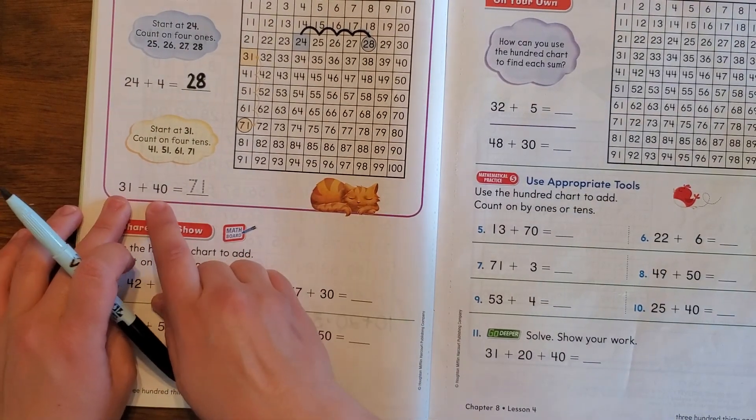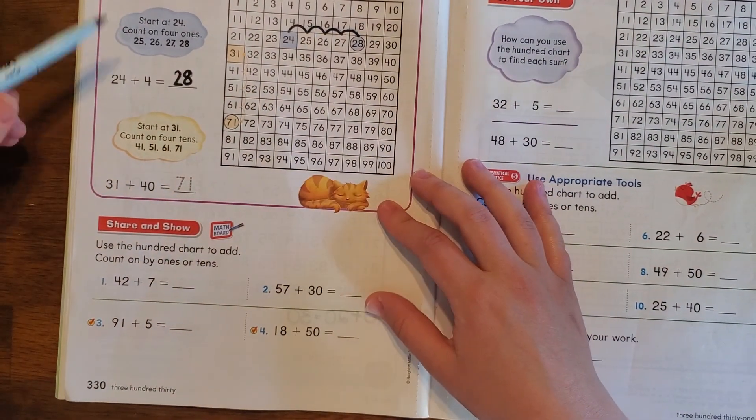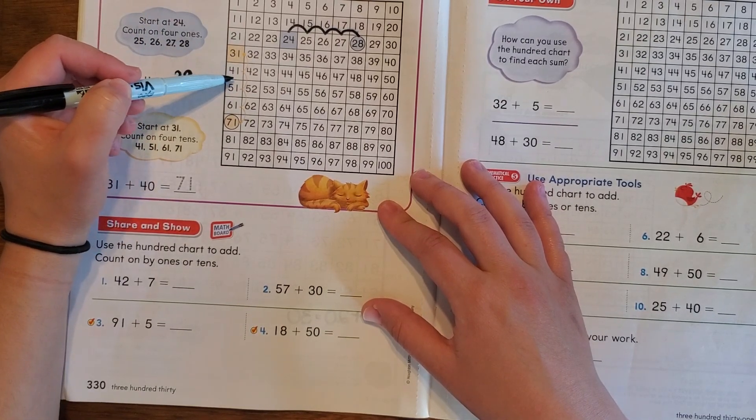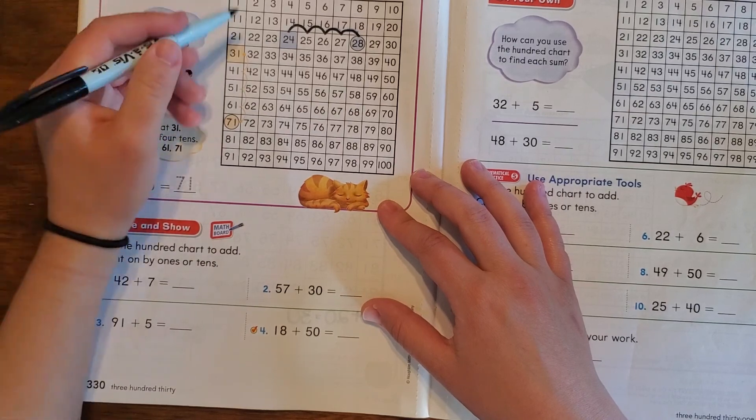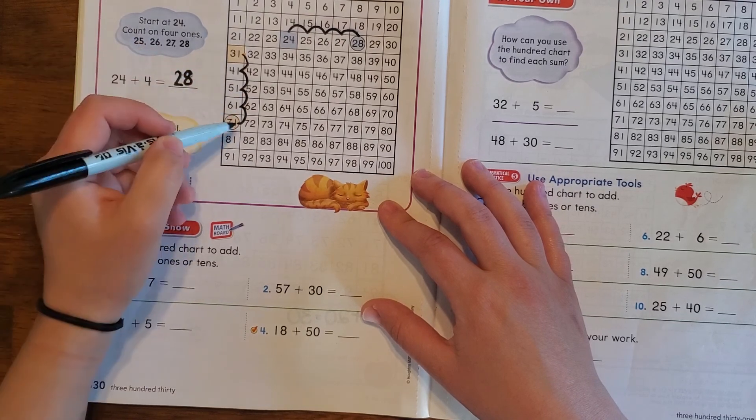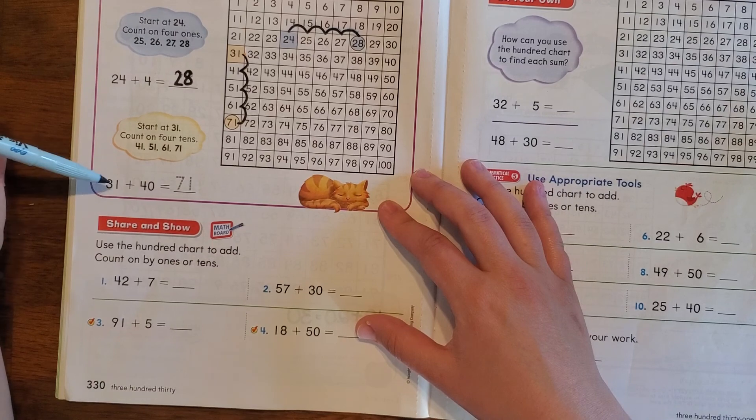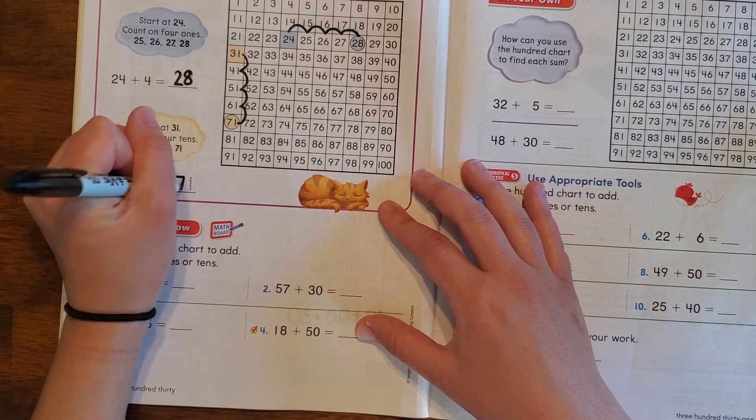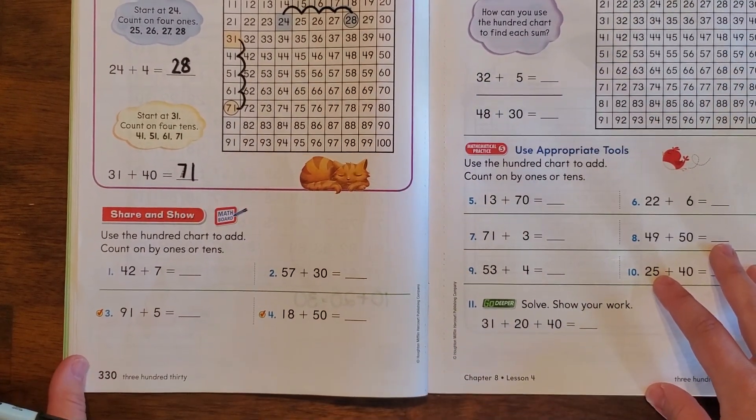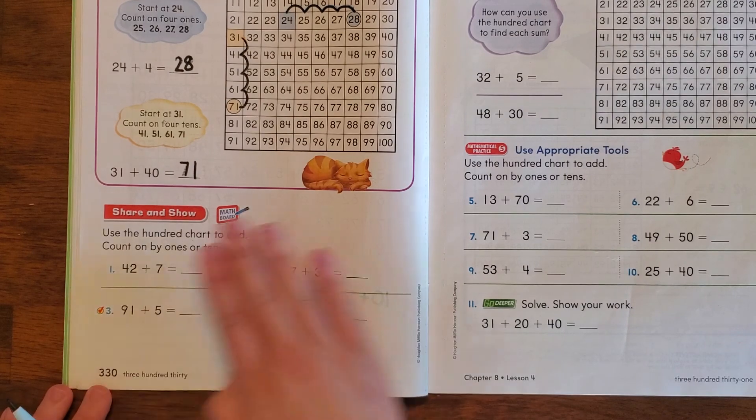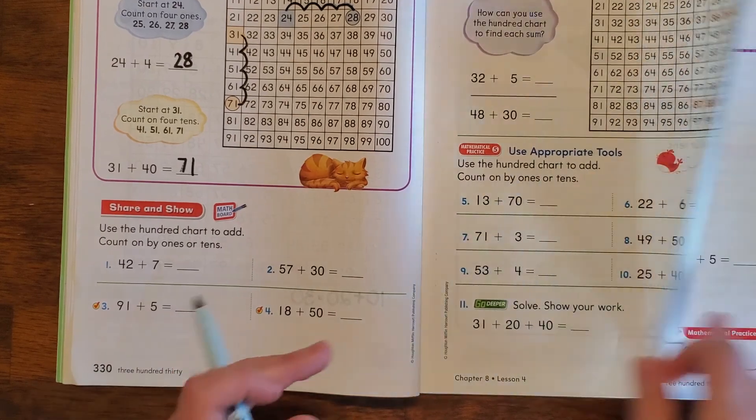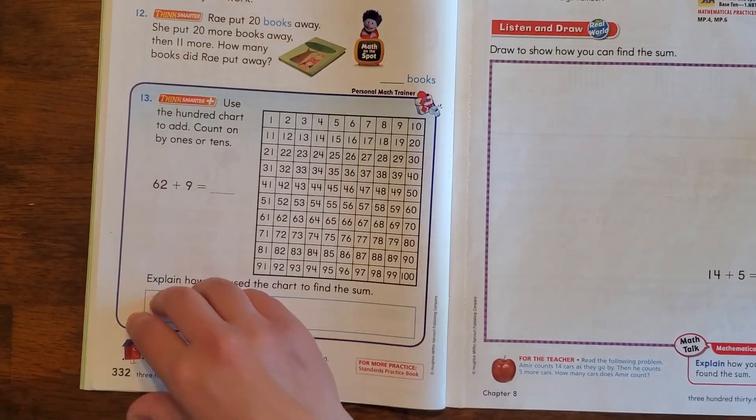So if we want to do 31 plus 40, we're going to count on 4 tens. We know that if we go down one box, that's like adding 10. So we want to add 40, so 10, 20, 30, 40, and that gives us 71. So 31 plus 40 more is going to be 71. All right, so I will do a couple of these ones, and then you can do page 331 and page 332 on your own.